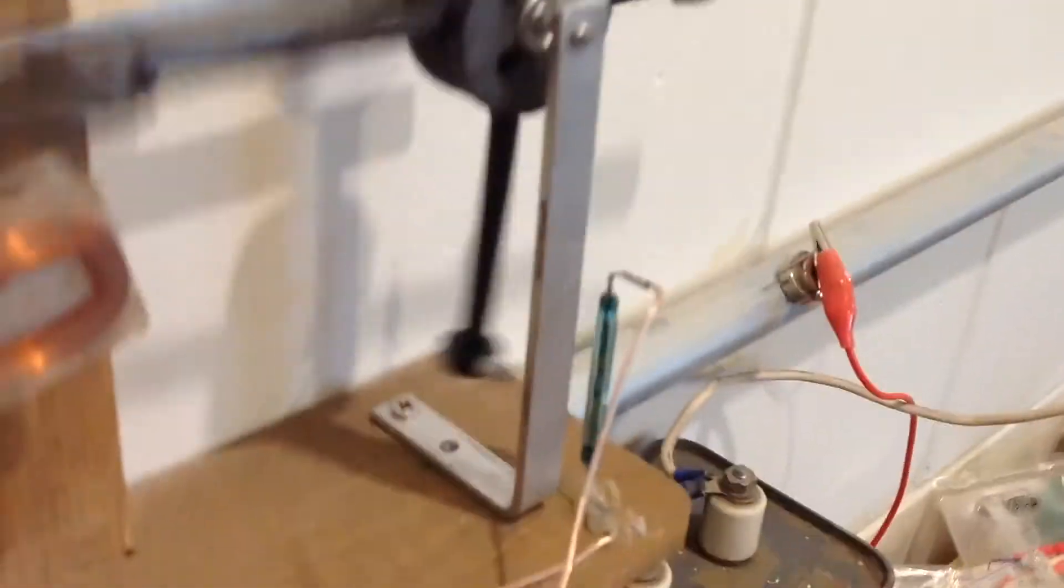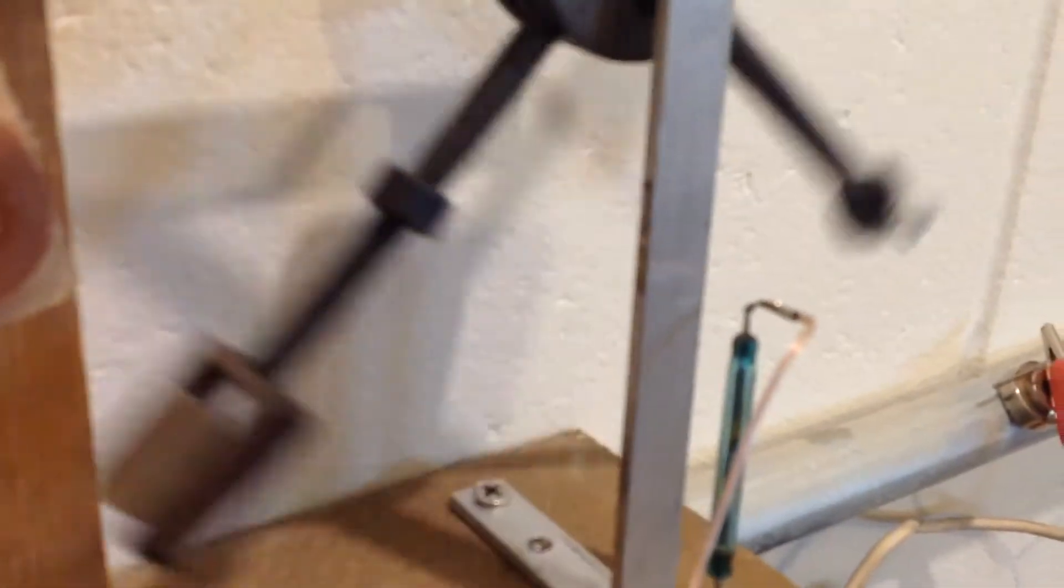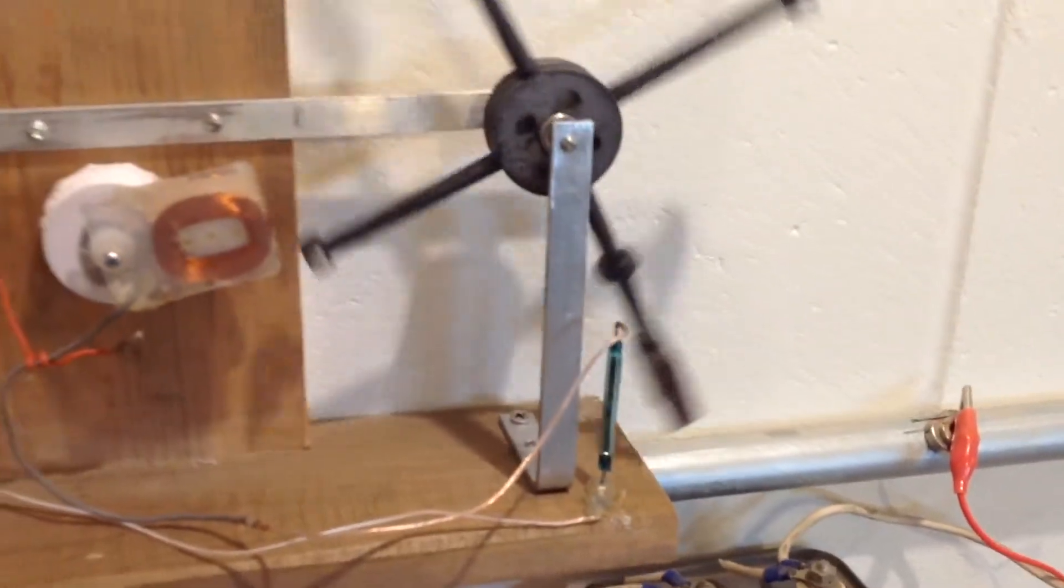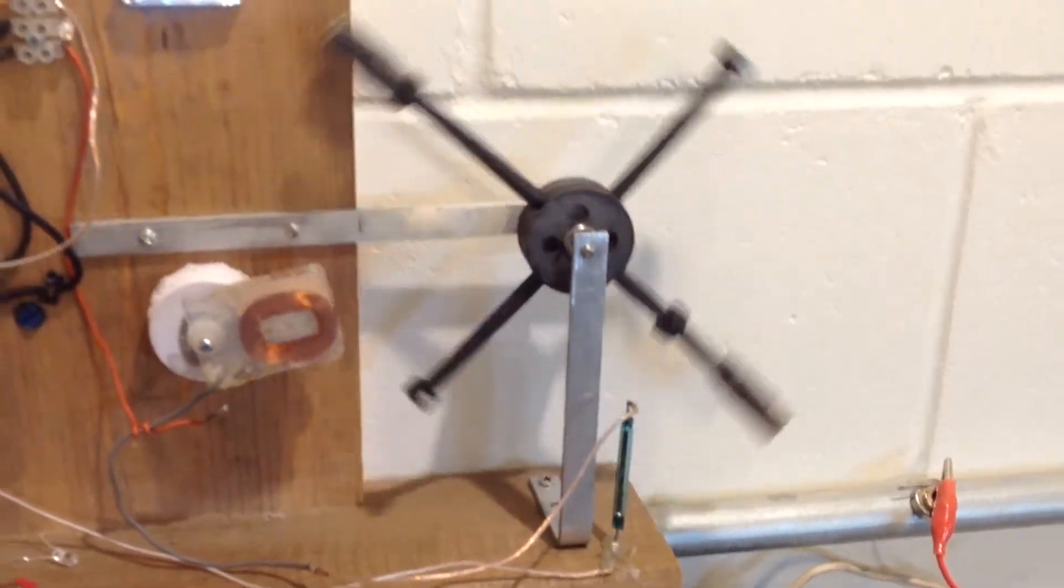The clicking you hear is from the reed switch. The reed switch there is what triggers the coil. And it's triggered right as it goes through the upper part of the coil, the upper half.